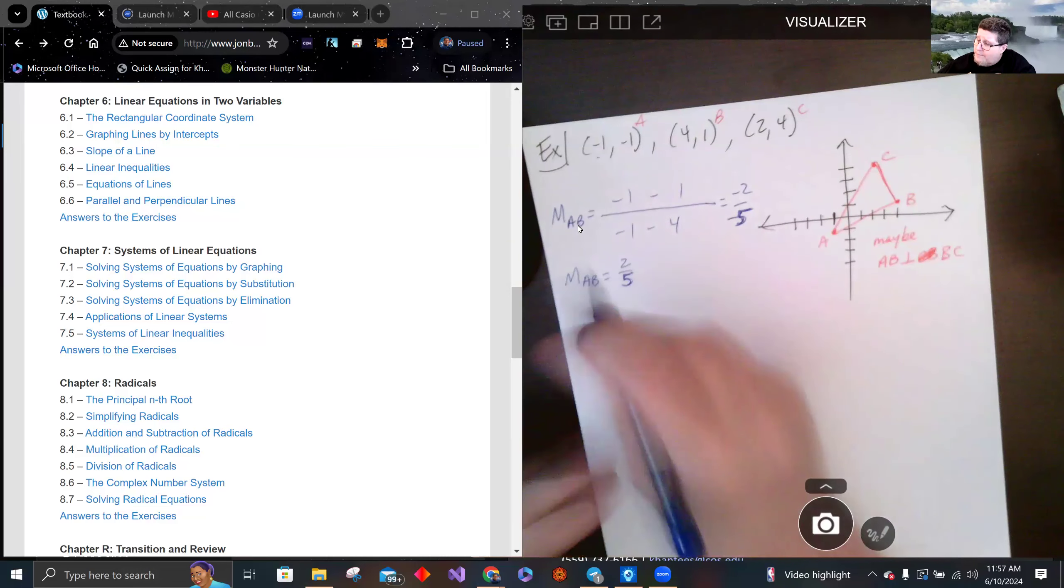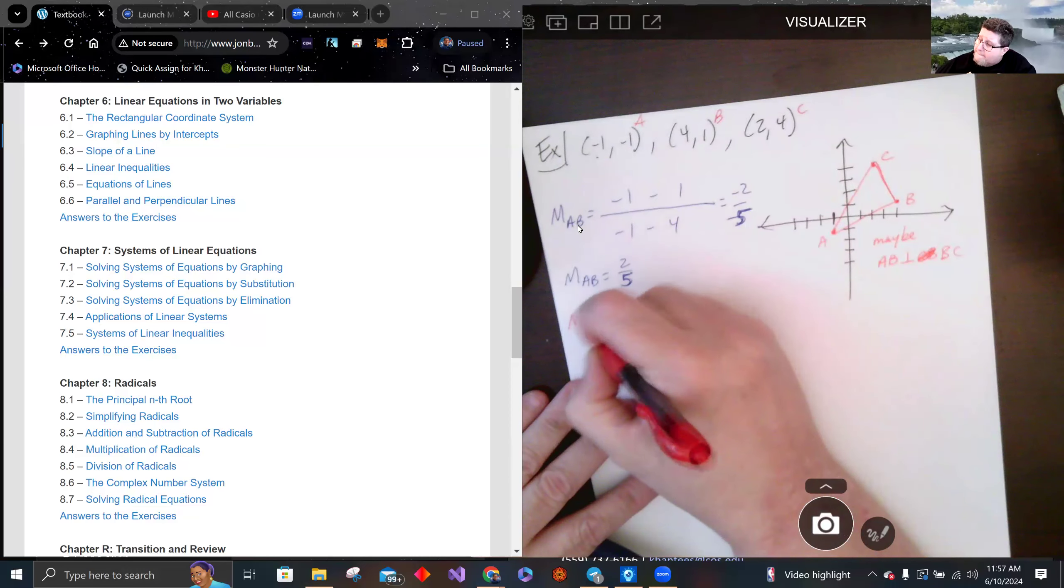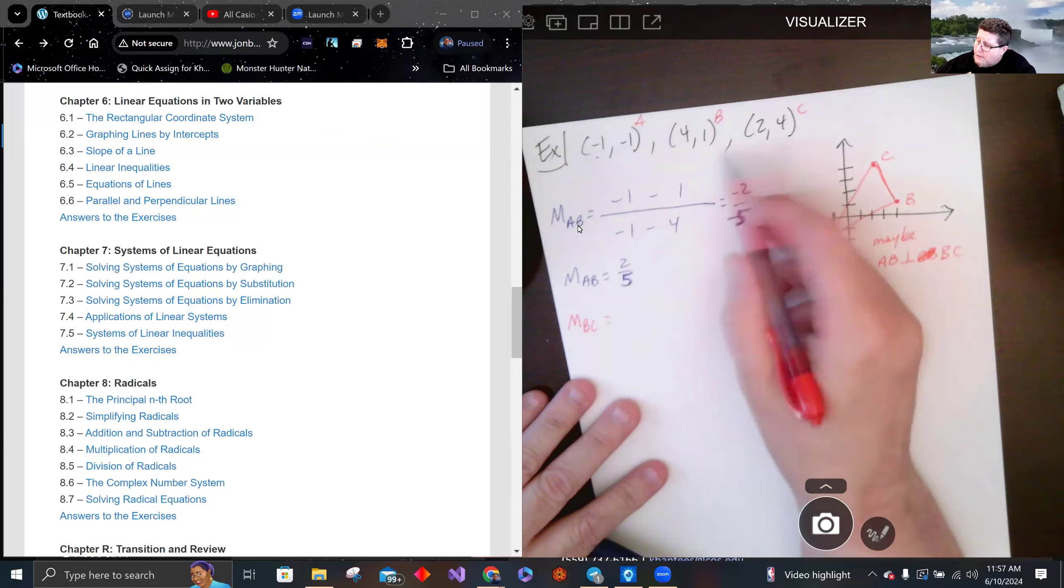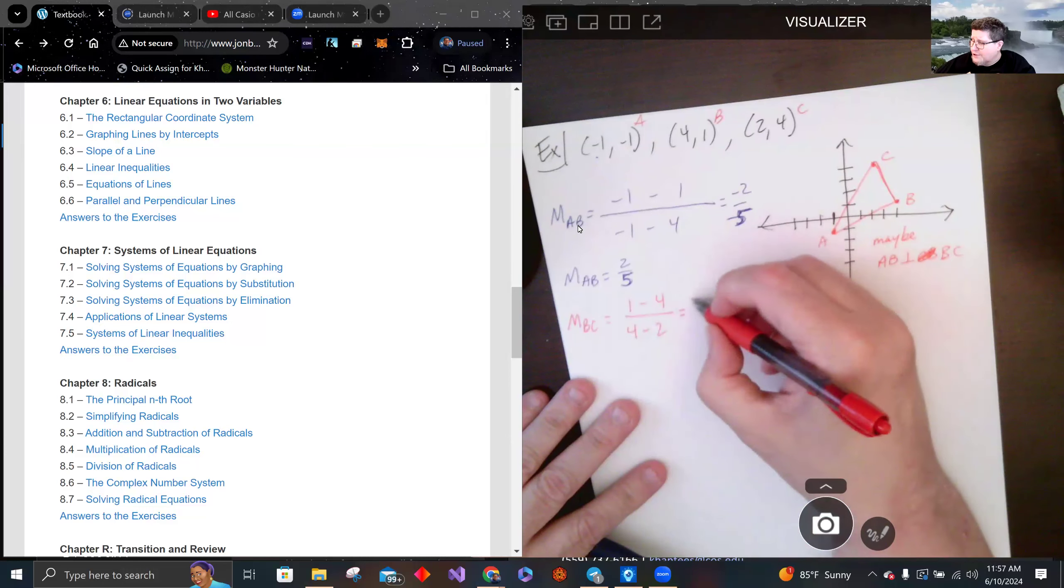Then we'll do m_BC: (1-4)/(4-2), this is -3/2.